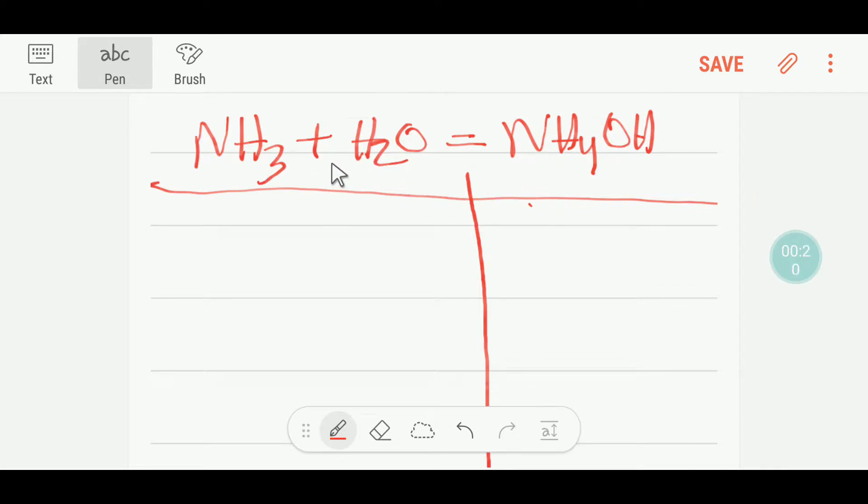This is the reactant side on the left hand side, this is the right hand side. So here we have one nitrogen, and here we have 3 plus 2, that is 5 hydrogen. Many people forget to add this hydrogen with this hydrogen.